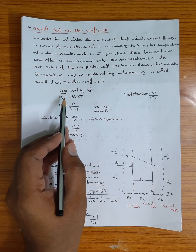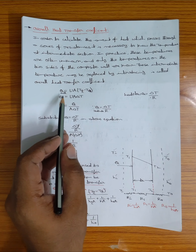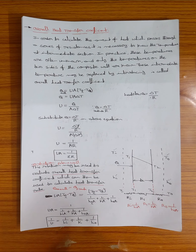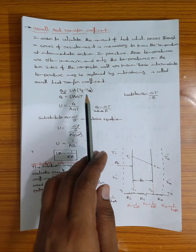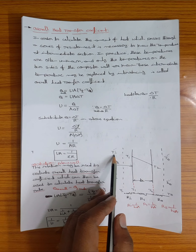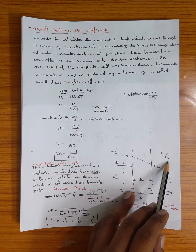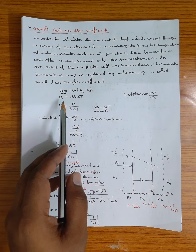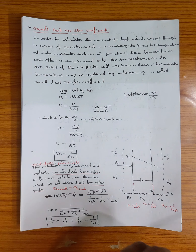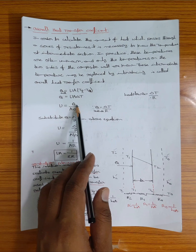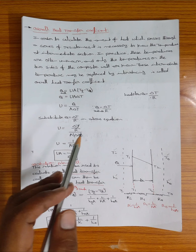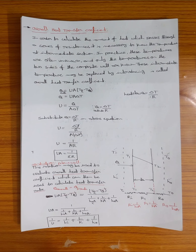The formula for Overall heat transfer coefficient is Q = UA × ΔT, where ΔT = TA minus T0 (initial convection temperature minus outside convective temperature). The general heat flow formula is Q = ΔT / R, where R is thermal resistance.